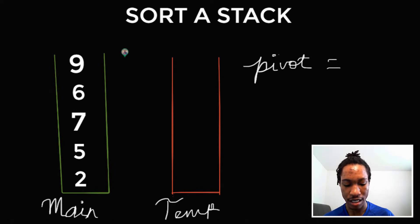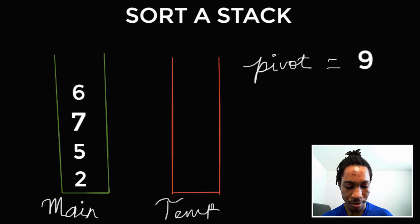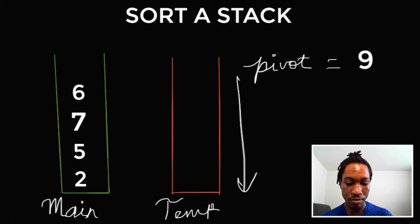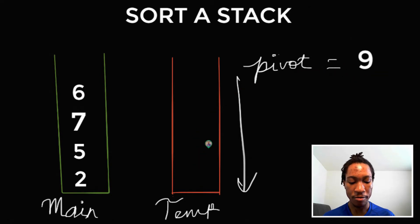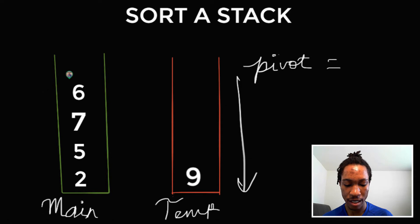Let's say we're iterating through the main stack and we pick a pivot value of 9. We're going to iterate through our temporary stack, and whenever we get to a number that's greater than our current pivot value, we pop it out of the temporary stack and push it into the main stack, then put the pivot value into the temporary stack. For now, we have no elements in the temporary stack, so we just put 9. Now our pivot value becomes 6.